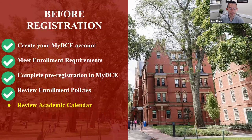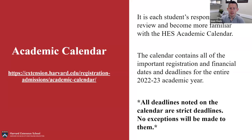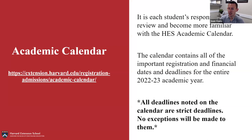Finally, before passing things over to Despina, a brief note on the academic calendar. The 2022-23 academic calendar is now available online and it is every student's responsibility to review it. It breaks down every important registration and financial date and deadline for the fall term, the January session, and the spring term. Every deadline noted on the calendar is a strict deadline — no adjustments or exceptions are made. We don't want students to miss sign-up windows or get dropped from courses due to missed payment deadlines, so please add all important dates to your phone, planner, or calendar now.